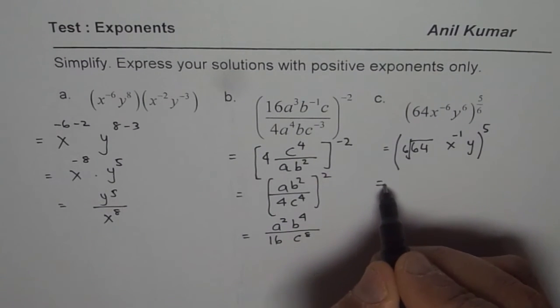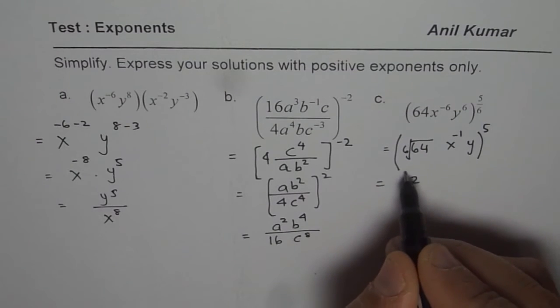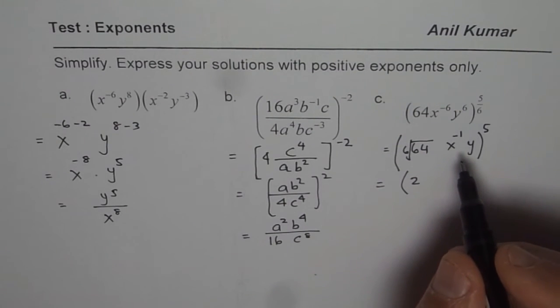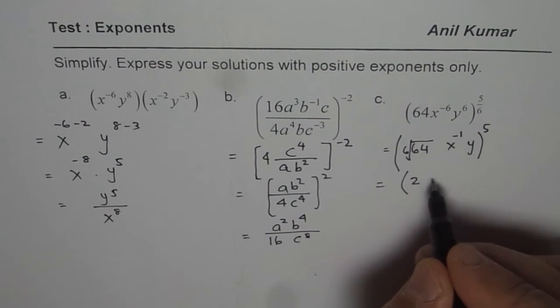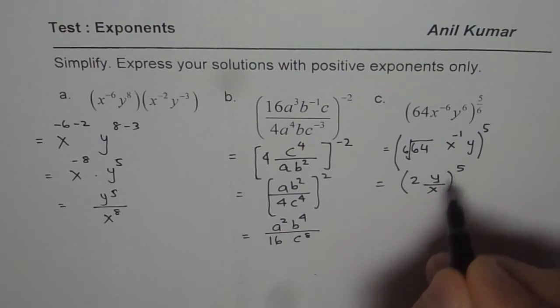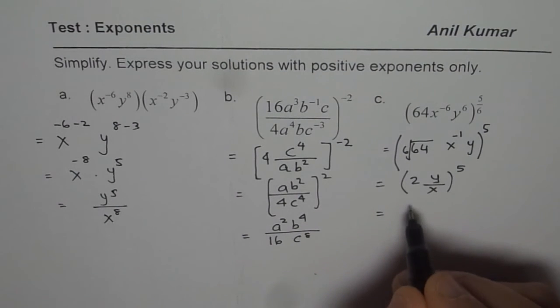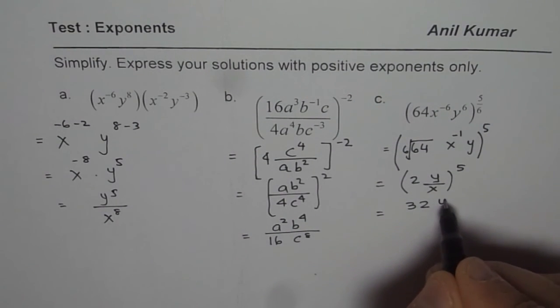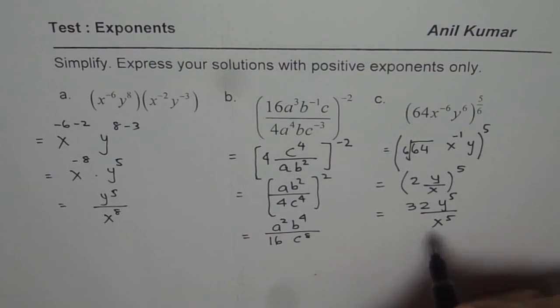The 6th root of 64 is 2. Since we want positive exponents, we write (2y/x)^5. 2^5 is 32, giving us 32y^5 / x^5 as our final answer.